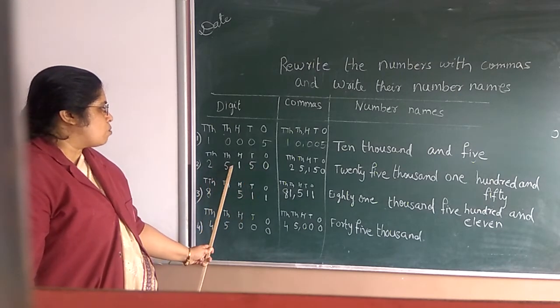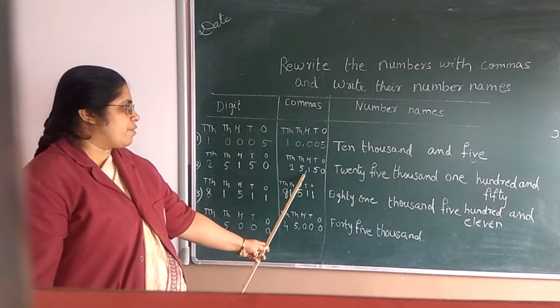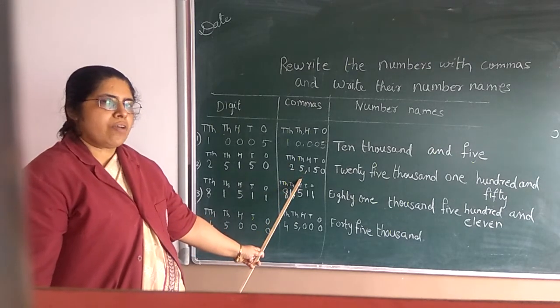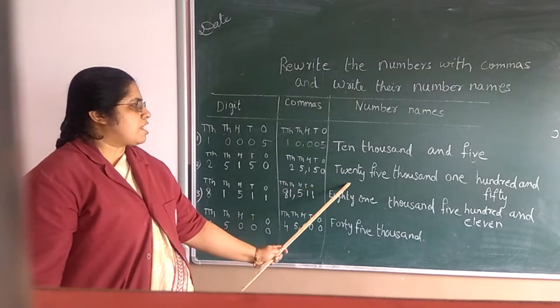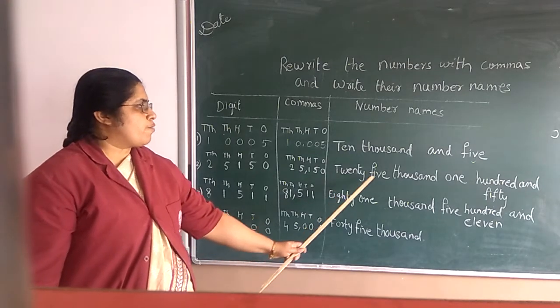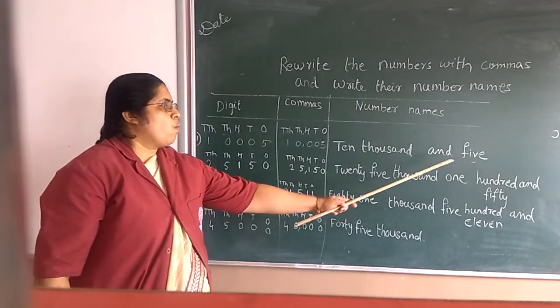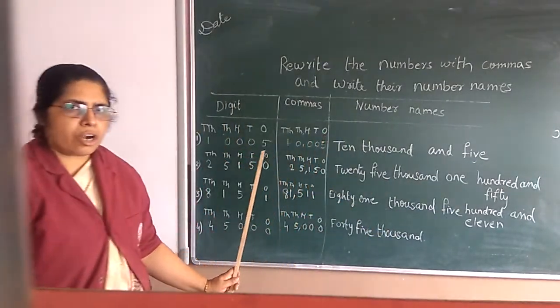25,150. Where you have to put comma? After 25. After 25 you have to put comma and 150. And same way how you will read? That you have to write in words. 25,150. Perfect.